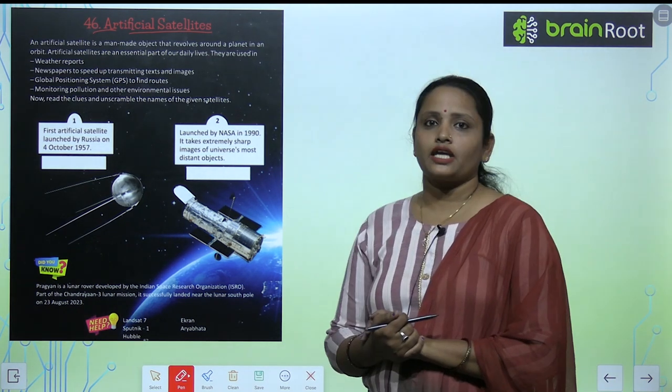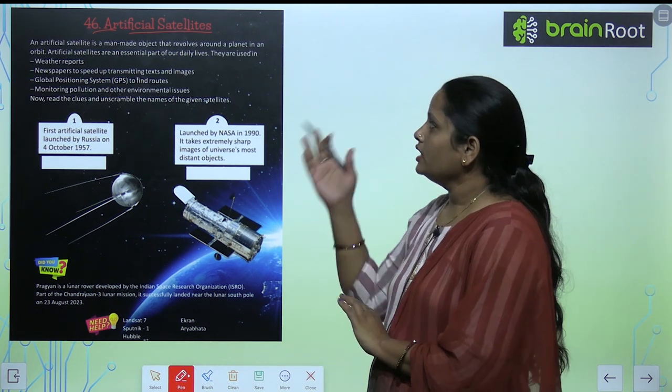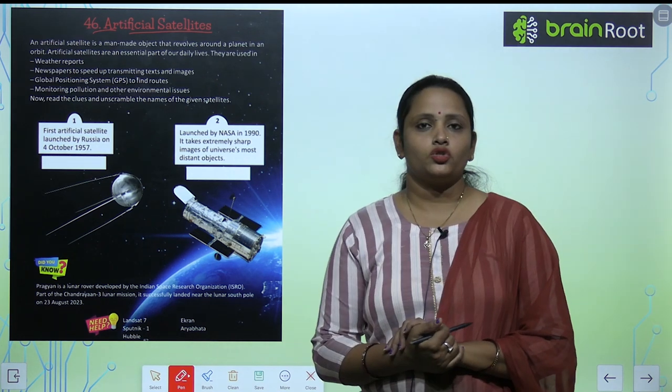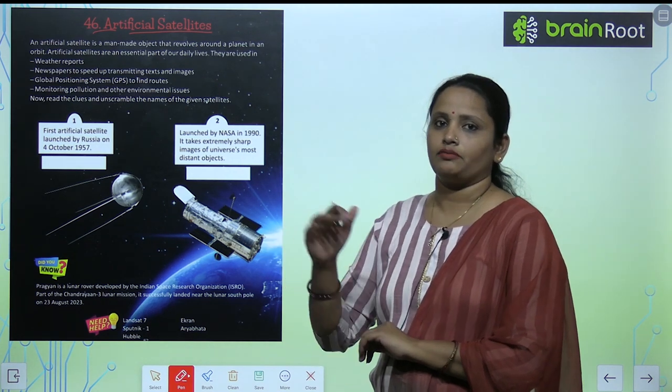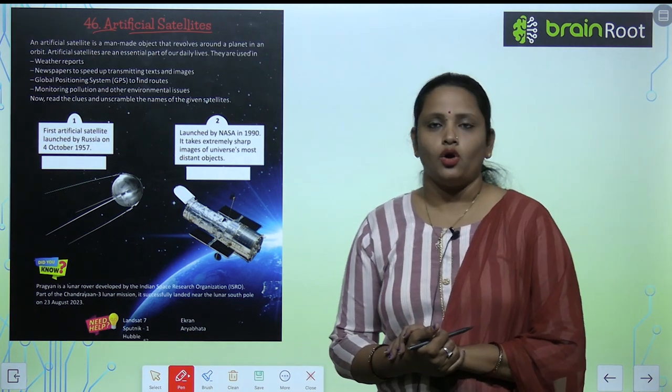An artificial satellite is a man-made object that revolves around the planet in an orbit.